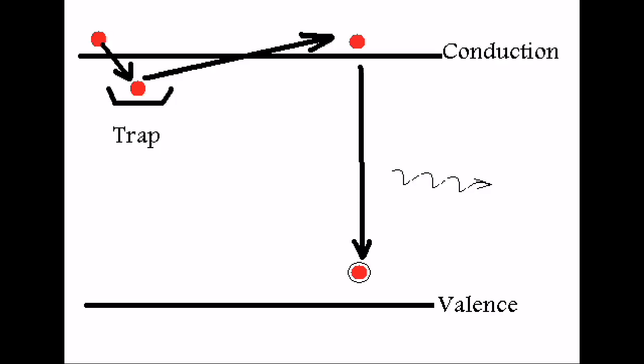Electrons are represented by solid red circles and holes by black circles. Holes can be just thought of as an absence of an electron. The valence band is the energy level where electrons will reside before being excited to the conduction band.